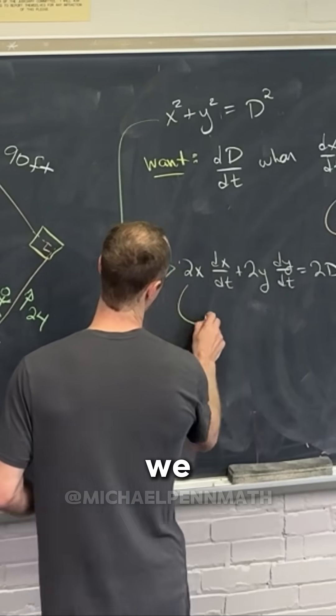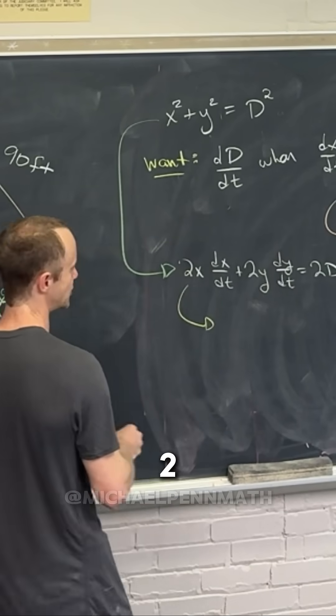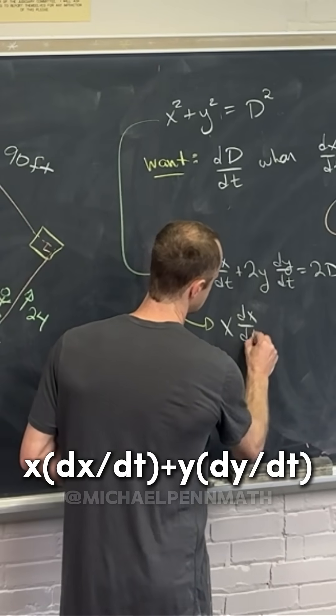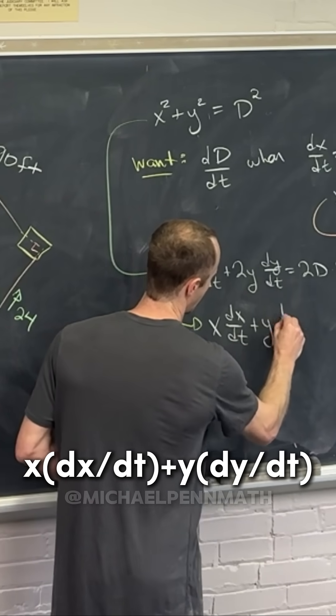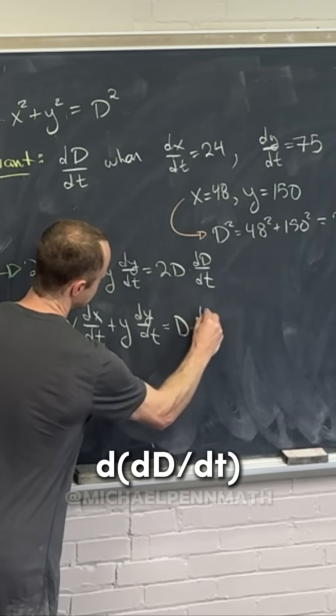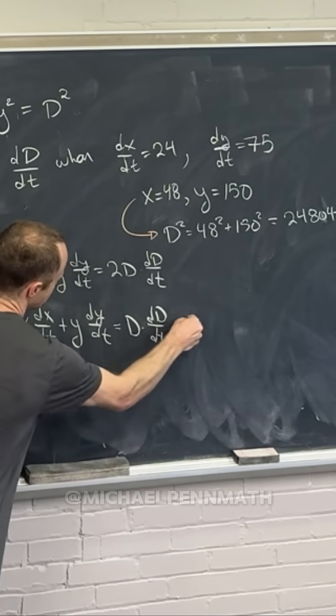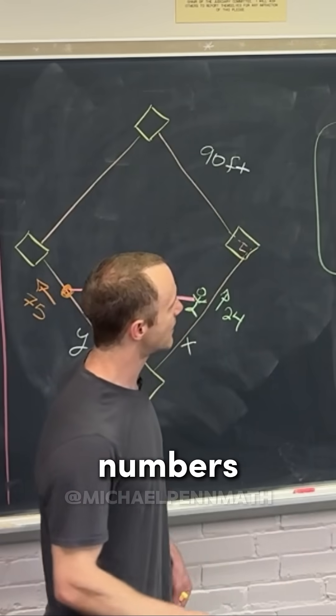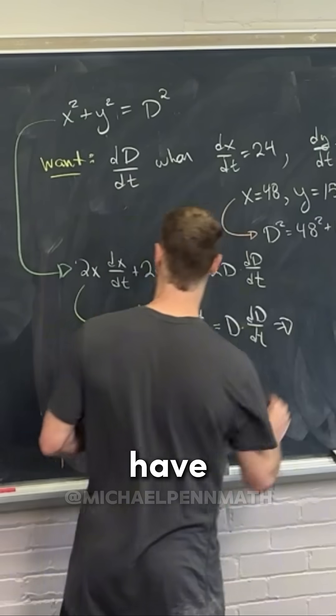Before we do that, let's divide everything by two, so we'll have x(dx/dt) plus y(dy/dt) equals d(dD/dt). Then plugging in all the numbers will get us there.